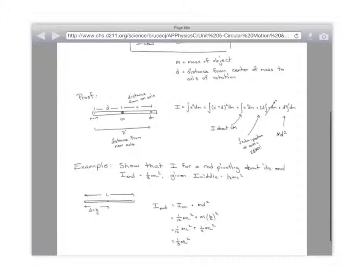Show that the moment of inertia for a rod pivoting about its end, if you already know that's one-third ml squared, wait, no, sorry. Show that it's one-third ml squared if you're given that the moment of inertia about the middle is one-twelfth ml squared. So, here we go. Moment of inertia about the end is equal to the moment of inertia about the middle plus md squared. So, one-twelfth ml squared plus m plus d from here to here is l over 2, so l over 2 squared. So, one-twelfth ml squared plus one-quarter ml squared makes one-third ml squared, and that's it.